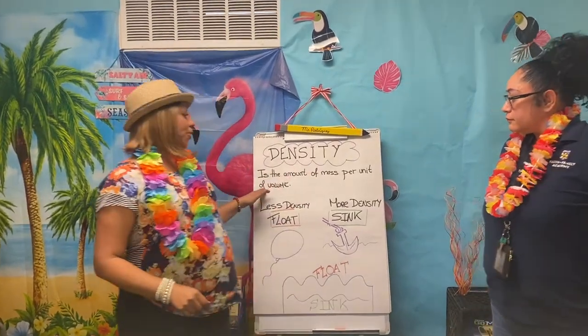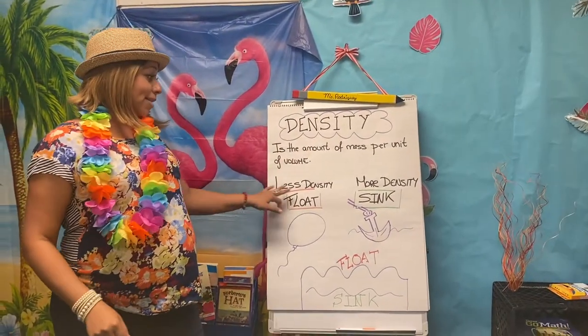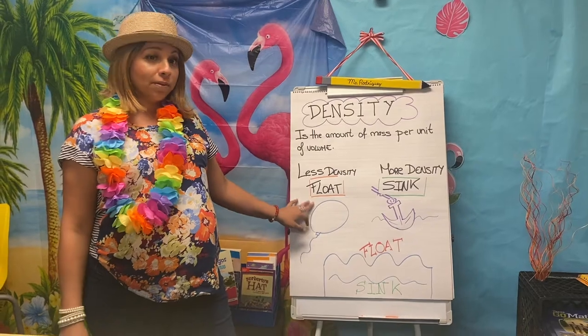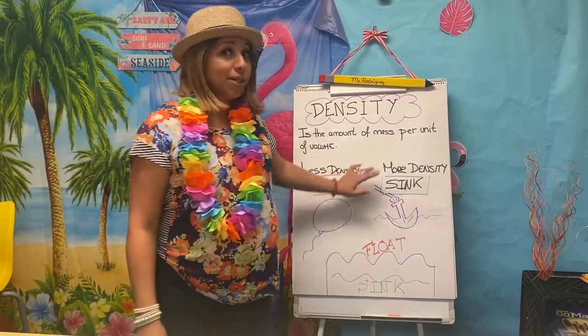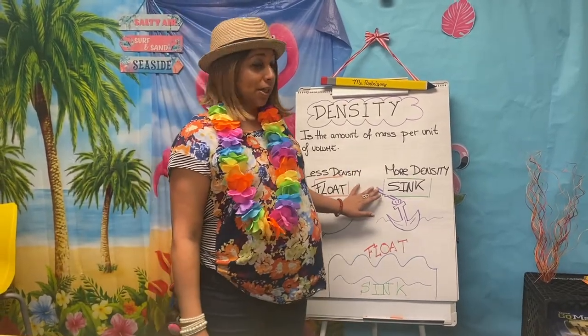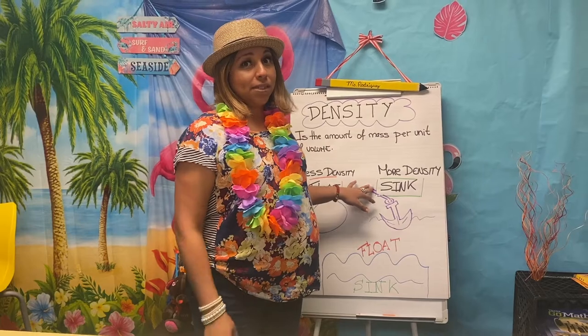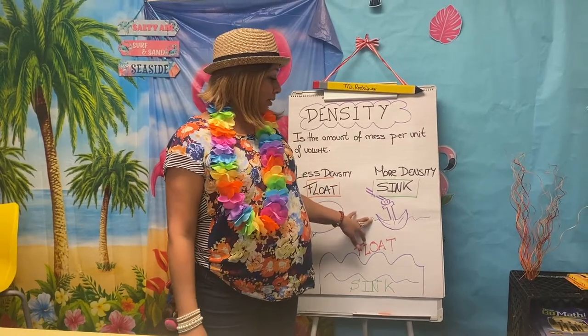Density is the amount of mass per unit of volume. Less density means the object will float, like a balloon. The more density an object has, the more chance of it sinking, just like this anchor.